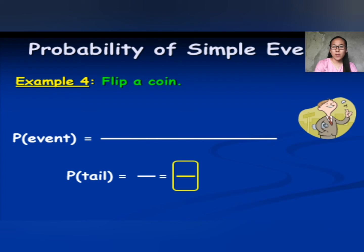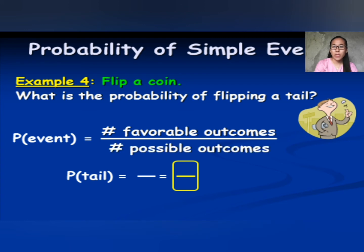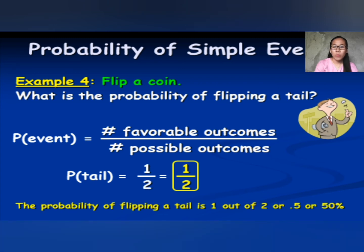Next: flip a coin. What is the probability of flipping a tail? When you flip a coin, there are only 2 possible outcomes: getting a tail or getting a head. The probability of getting a tail is 1 out of 2. So the probability of flipping a tail is 1 out of 2, or 0.5, or 50%.